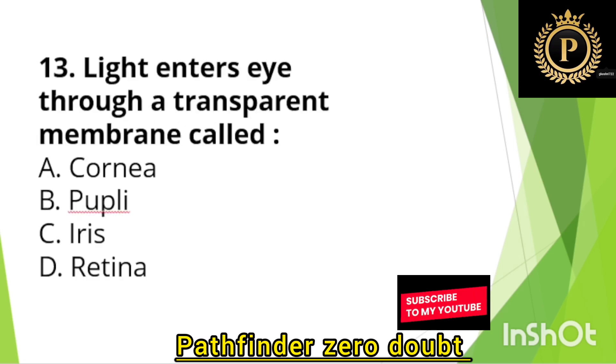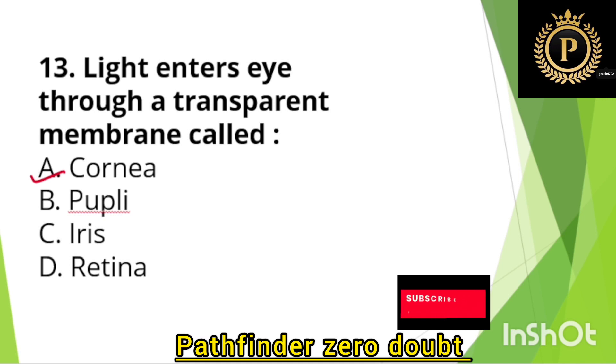Light enters the eye through a transparent membrane called — Option A: Cornea.